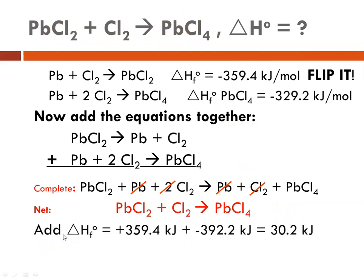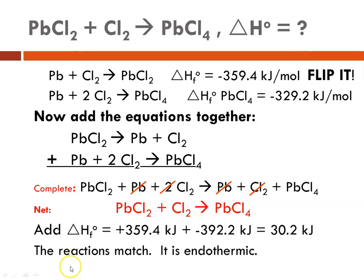Now we need to add up our delta H's. The delta H of formation for lead(II) chloride, when flipped, became a positive number, and the lead(IV) chloride formation delta H was negative. Combining those two gives us positive 30.2 kJ, which matches what we looked up. The reactions match, the delta H is the correct number, and because it is positive, this is an endothermic process.